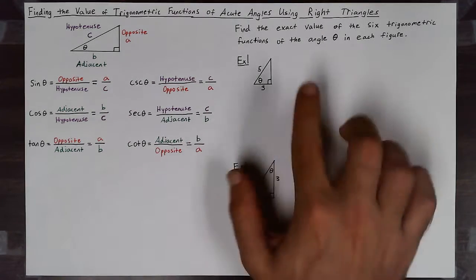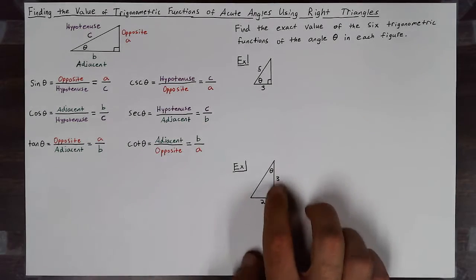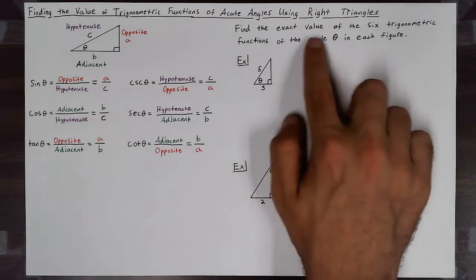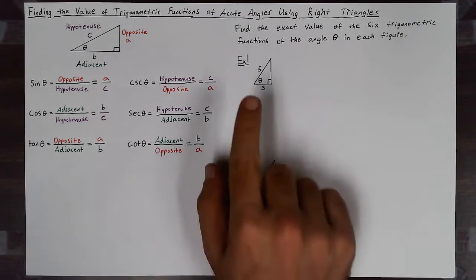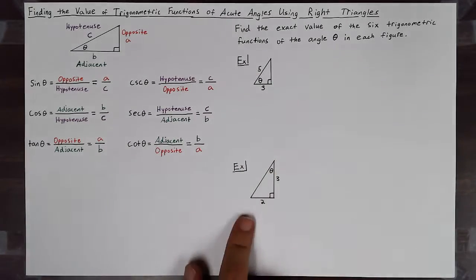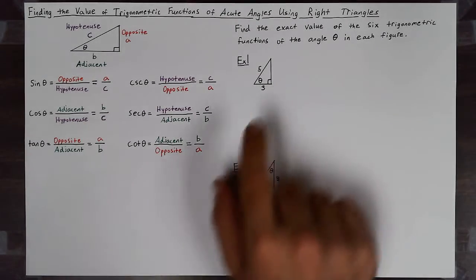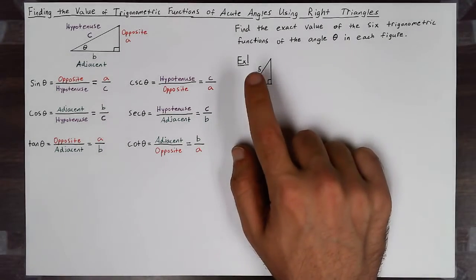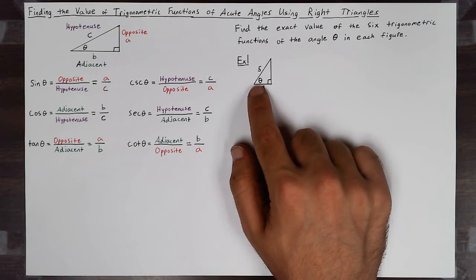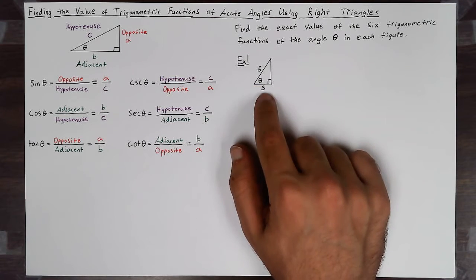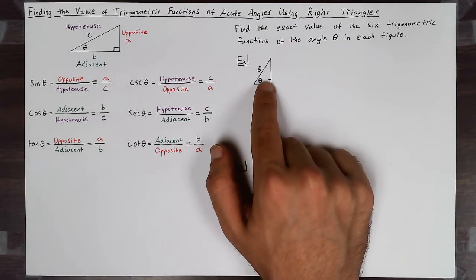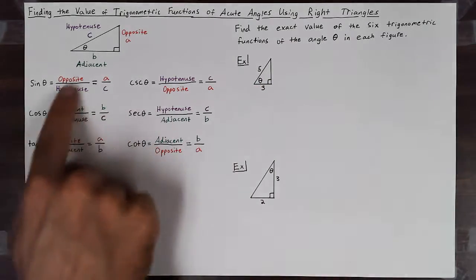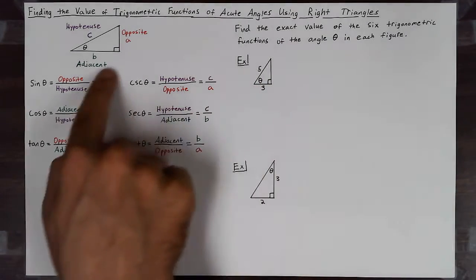Now let's look at these two examples on the right. We're going to find the exact value of the six trigonometric functions of angle theta in each figure. In the first figure, theta is given on the bottom left, and I have the adjacent side and the hypotenuse, but I still need to find the opposite side in order to find the values of all six trig functions.